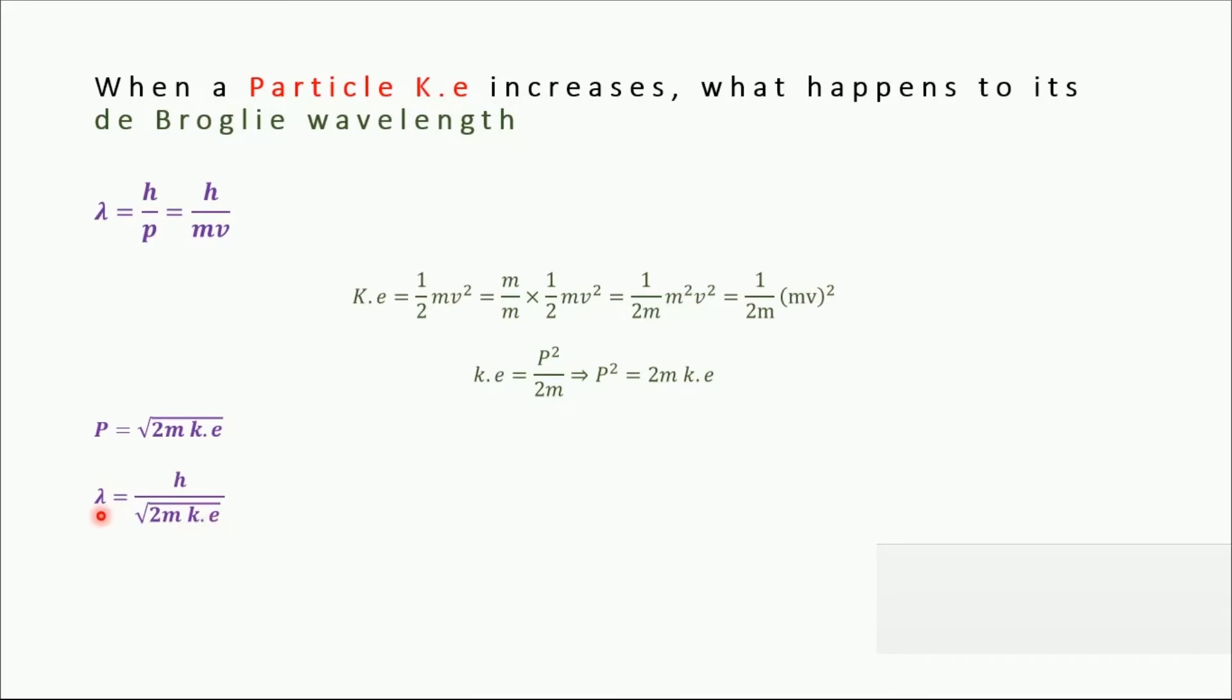Now it's clear from this equation that there is a relationship between wavelength lambda and kinetic energy of a particle, and this is an inverse relationship. This means if we increase the kinetic energy, the de Broglie wavelength will decrease. But when we decrease the kinetic energy, the de Broglie wavelength will increase.